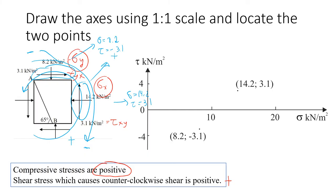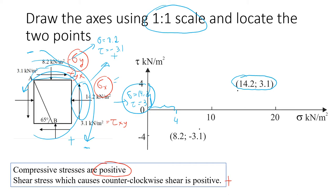Next, we draw the axes. The most important thing is that it should be a one-to-one scale — if it's not one-to-one scale, you won't be able to draw the circle correctly. So this distance of four corresponds to four on the axis. Then we locate the two points: point one at 14.2 with shear stress 3.1, and point two at 8.2 with shear stress negative 3.1. Remember: axis one-to-one scale, then locate the two points.